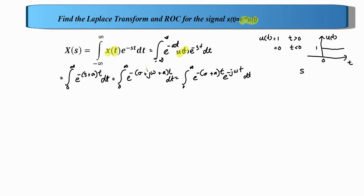There is a condition for the Laplace transform to exist: the signal times this exponential portion must converge, meaning it must be absolutely integrable. In order to make it absolutely integrable, the term sigma plus a must produce a converging result when the limit is applied. This is only the explanation part; we don't need to go into this portion further.